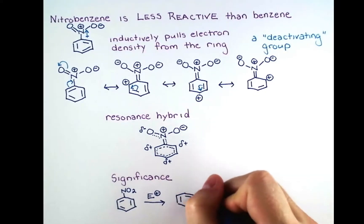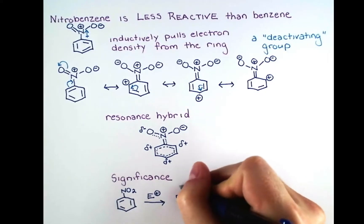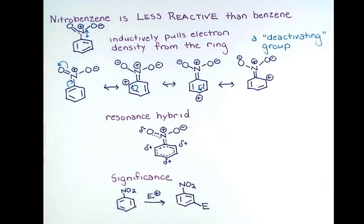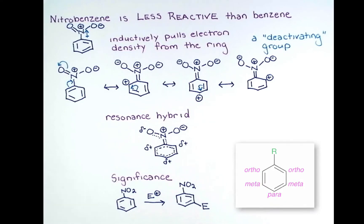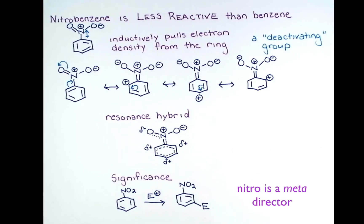Therefore, the electrophile is going to bond at one of the carbon atoms that does not have positive character, and we can show our electrophile bonding to just one of them in our reaction scheme. On a substituted benzene, we can define the position that a new electrophile attaches with respect to that group. The adjacent positions are the ortho-positions, next to those are two meta-positions, and across from the group there is one para-position. So we can say that the nitro group is a meta-director.